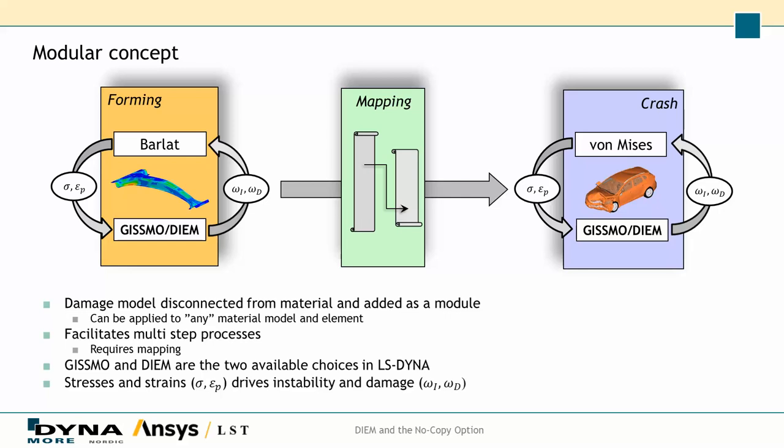Inevitably when going to the next phase of the process you may need to do some mapping, because the gizmo or DM information is contained at a certain location in the history list and you may want to move that if you change the material — in crash you typically use different materials than in manufacturing. The procedure is then the same when it comes to using gizmo or DM in connection to the material model.